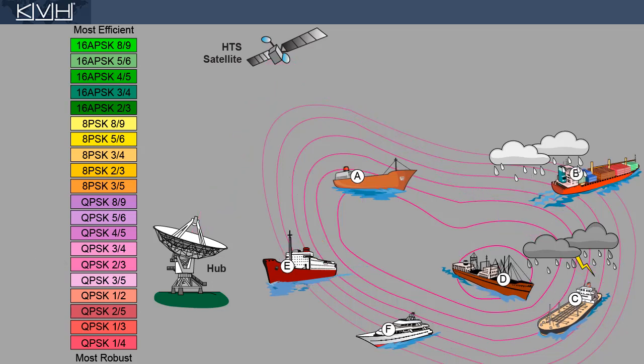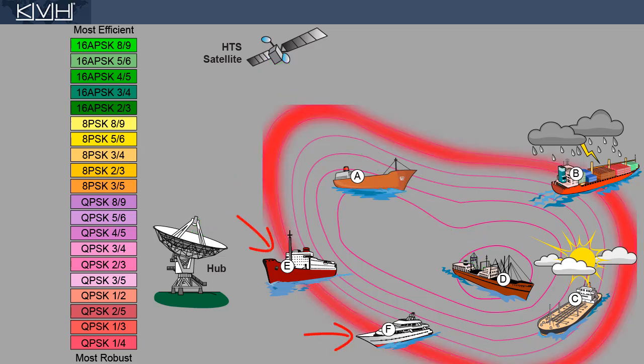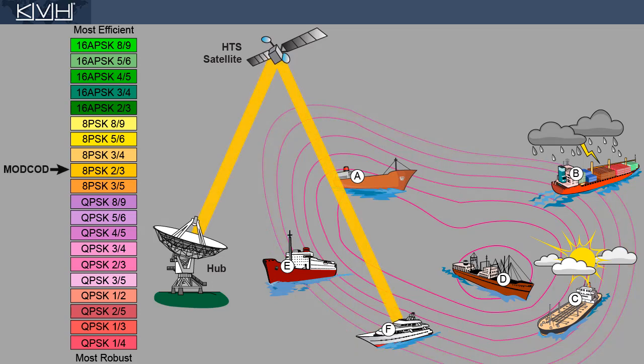Now let's see what happens when vessels move and conditions change. Vessels A and D continue to operate near the center of the beam in good weather, so their MODCODs remain unchanged. Vessels E and F, however, have moved even closer to the edge of the beam, where the signal is weakest. Therefore, they have switched to more robust MODCODs. We can expect these vessels to soon transfer to an adjacent spot beam.